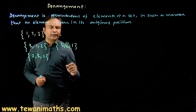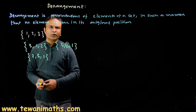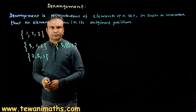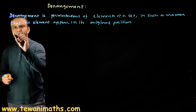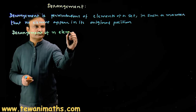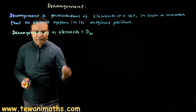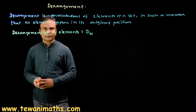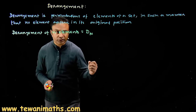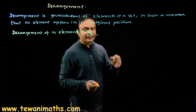The meaning of derangement is that not a single element is appearing in its original position. Now we want a general formula for the derangement of n elements. Let's derive that formula. We have derangement of n elements, suppose it is denoted by D(n). Now, what is the complement of derangement? Derangement means no elements in its original position — so what is the complement of this?